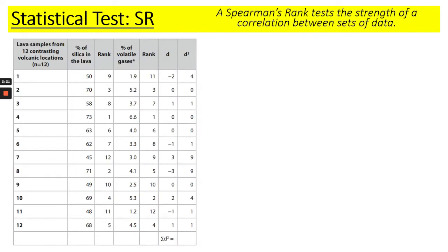We apply the same rule to Spearman's rank. A Spearman's rank tests the strength of correlation — the strength of relationship between two sets of data. This example uses silica in lava and volatile gases. You're given the rankings, the difference D, and the D squared values. For year 13, most of you skipped the very first part, which is to calculate the sum of D squared. That will always be at the bottom of a table. To do that, you add all of the D squared values up: 4 plus 1 plus 1 plus 9 plus 9 plus 4 plus 1 plus 1, which gives you 30.